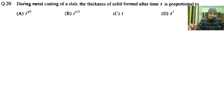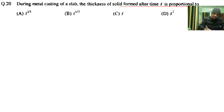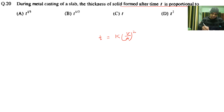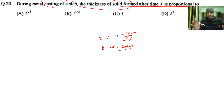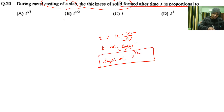The next question: during metal casting of a slab, the thickness of solid formed after time t is proportional to what? For casting, we use Chvorinov's rule: t = k × (V/A)², meaning time is proportional to (V/A)². This simplifies to a length squared. So thickness, being a length, is proportional to t^(1/2). The correct answer is option B.